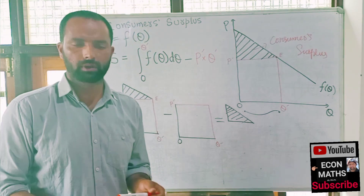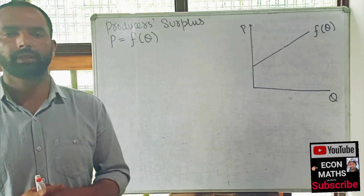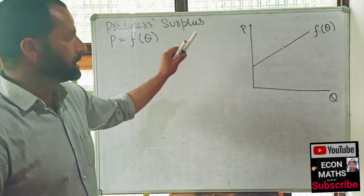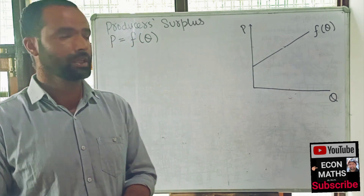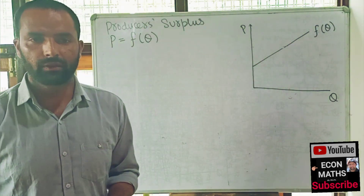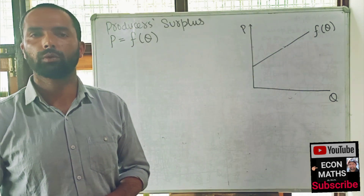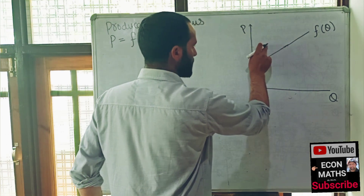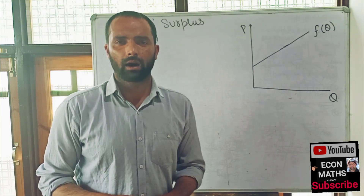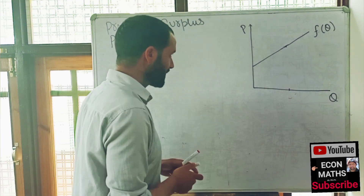Now we will discuss about the producer surplus. The producer surplus, as we know, is the difference between the price producers are willing and able to supply a good for and the price they actually receive. If I have a supply function P = F(Q), this supply function represents the prices at which different quantities of a good will be supplied in the market.